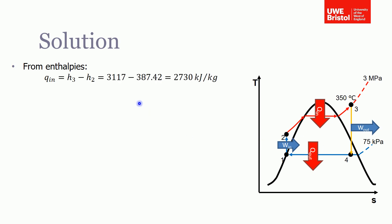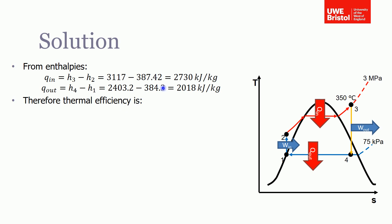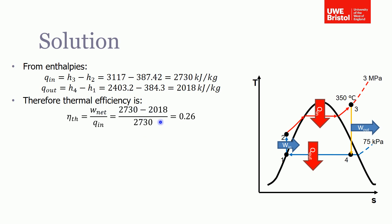Now that we have all four enthalpies, we can solve what the question actually asked. For thermal efficiency: Q_in is the difference between h3 and h2, giving 2,730 kilojoules per kilogram, and Q_out is the difference between h4 and h1, giving approximately 2,018 kilojoules per kilogram. Thermal efficiency equals W_net divided by Q_in, and since W_net = Q_net around the cycle, we end up with a thermal efficiency of 26%.